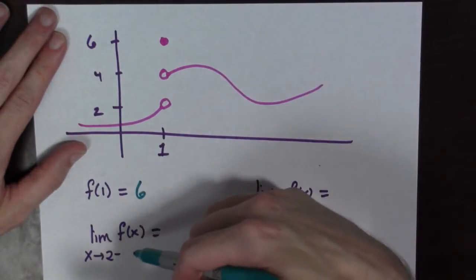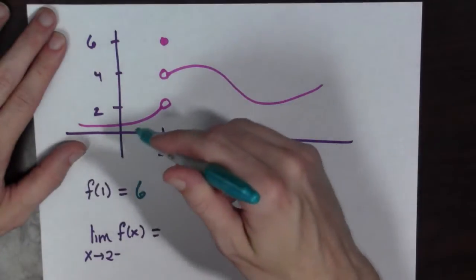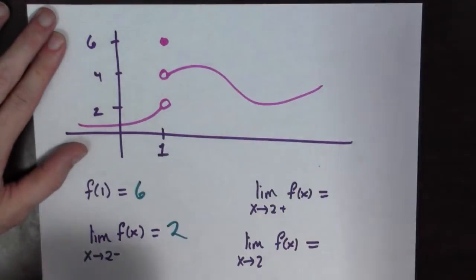Now what's the limit of f of x as x goes to 2 from the left? Oh, well it's 2. So we go up, there we are.